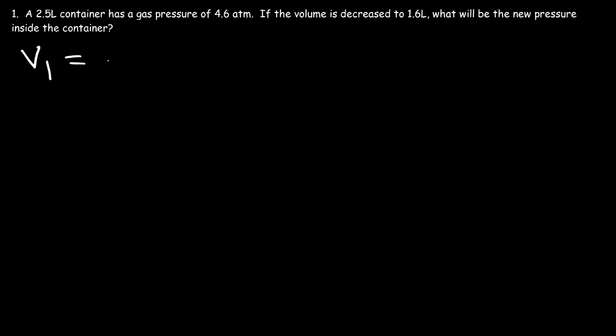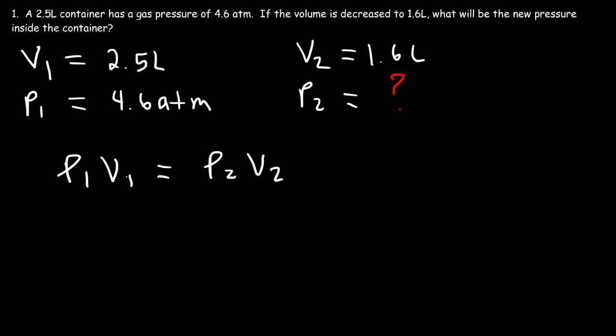So V1, the first volume, is 2.5 liters and the pressure that corresponds to that volume is 4.6 atm. Now the volume is decreased to 1.6 liters, so that's a new volume, V2, and we're looking for the new pressure, P2. So all we need to do is use this equation. P1 V1 is equal to P2 times V2. So P1 is 4.6 atm. V1 is 2.5 liters. Our goal is to calculate the value of P2 and V2 is 1.6 liters.